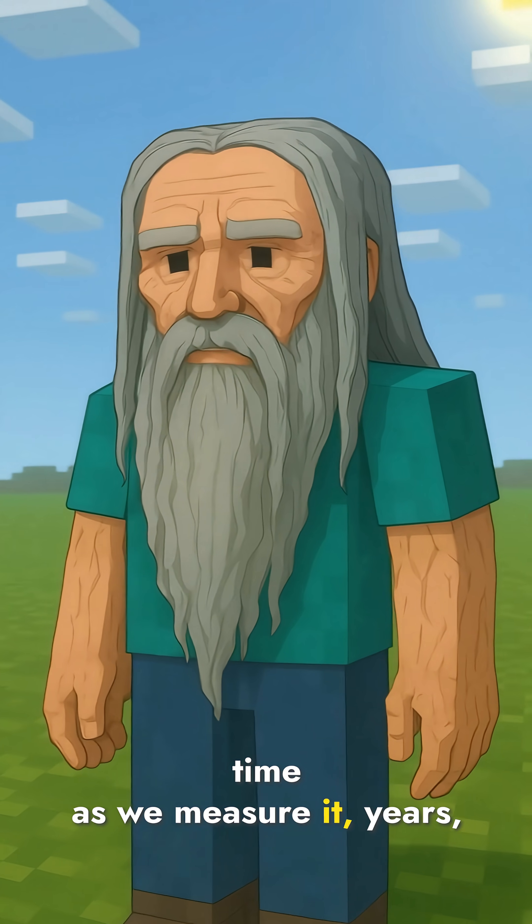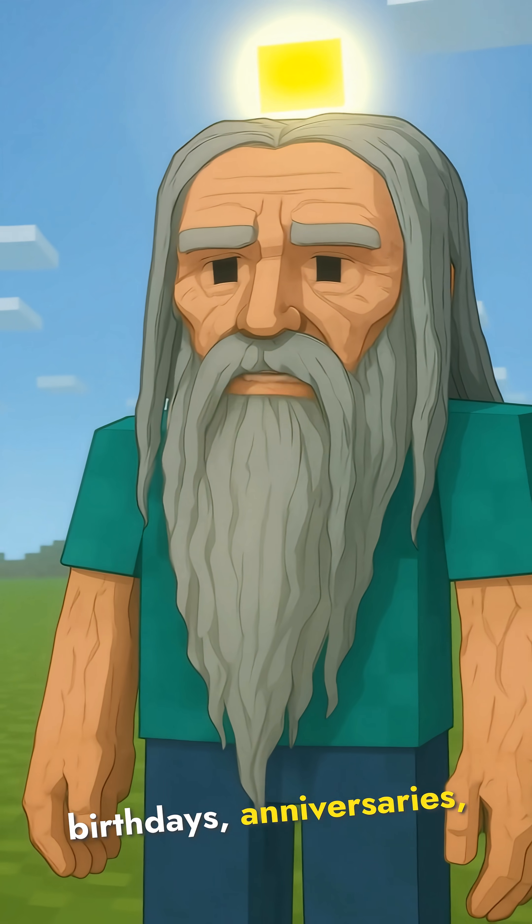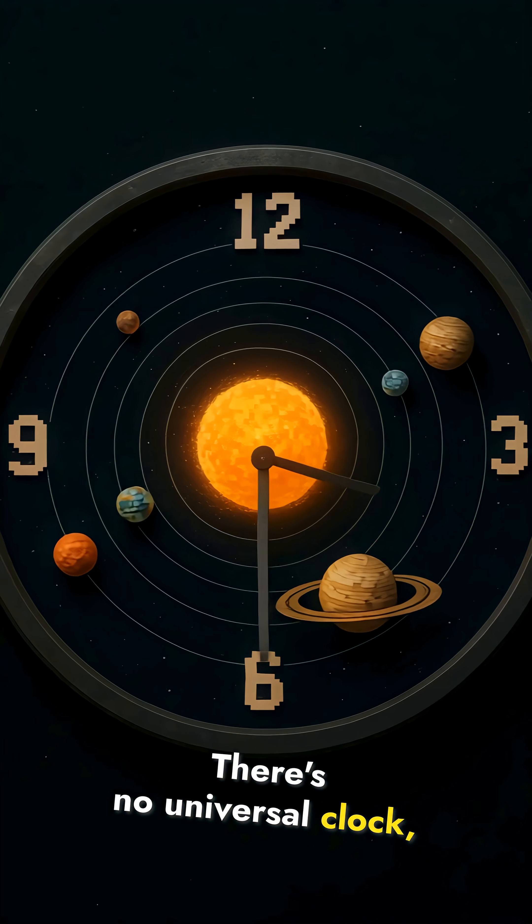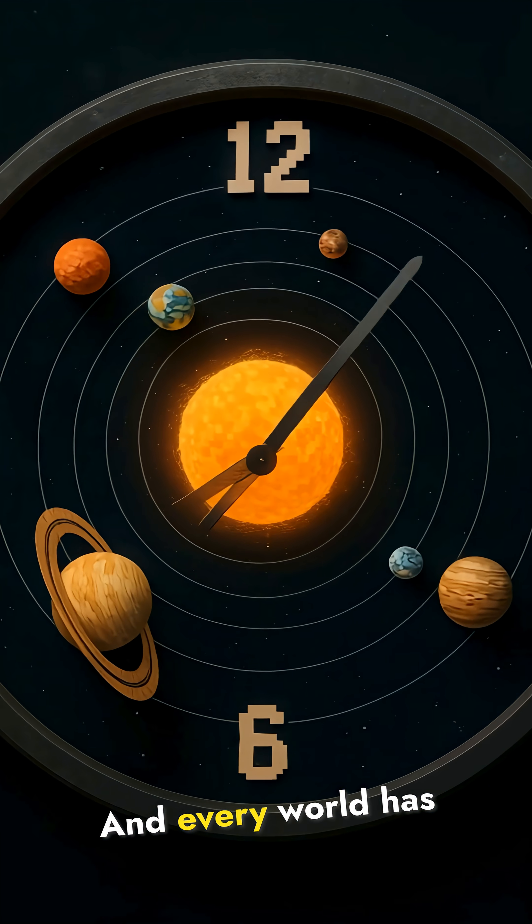So here's what this means - time as we measure it, years, birthdays, anniversaries, is completely arbitrary. It's just our particular dance around our particular star. There's no universal clock. Only motion. Only orbits. And every world has its own rhythm.